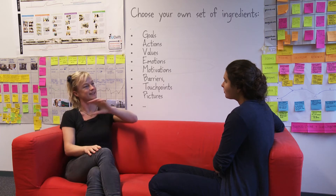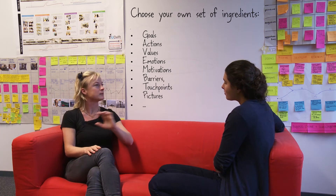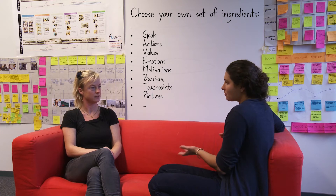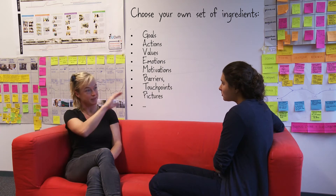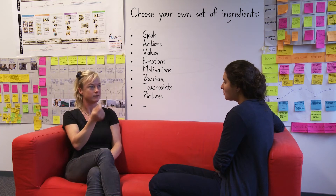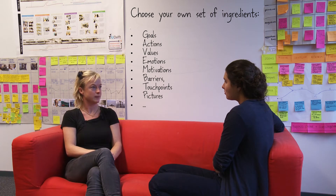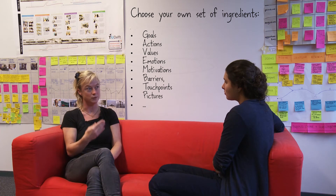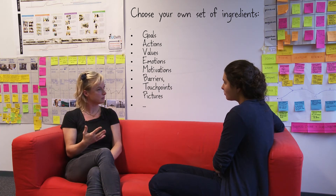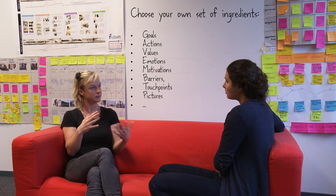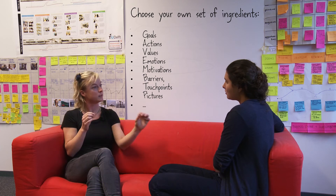You also have all these rows in journeys, and what you include really depends on your aim. You can include phases with a good description of each phase, sub-phases, and then what people experience — what they do, what they're thinking, what their emotions are, what their motives or values are. But you can also use it for opportunities, insights, barriers, pain points they encounter along the way, or the touch points with a service.